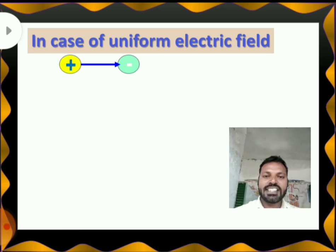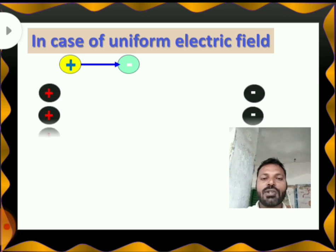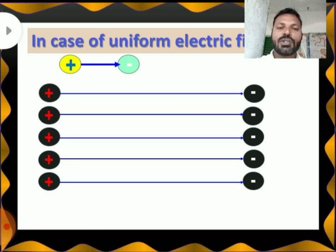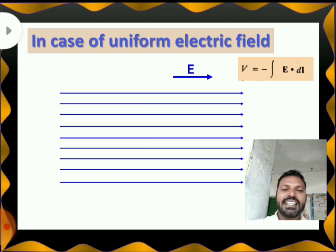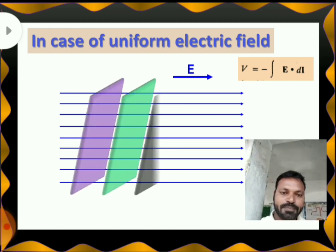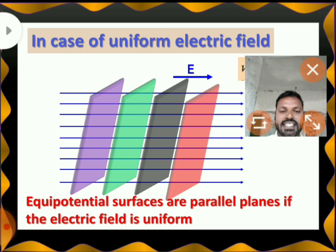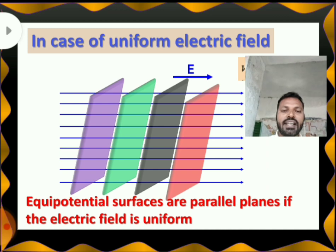If my charge is a point charge, then they are circles. But suppose my field is a uniform electric field — then what do we get? The direction of the electric field is from plus to minus. Let us consider positive charges and negative charges stationary, situated at a point. The direction of the electric field is from left to right. To find potential: V is equal to minus integral E dL. If I find out the equipotential surface for this uniform electric field, I will get parallel planes, which are perpendicular to the electric field direction. So equipotential surfaces are parallel planes when the electric field is uniform.